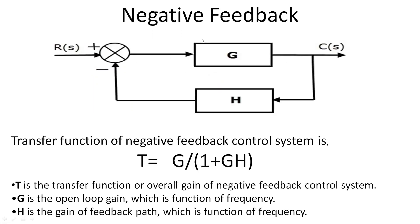For the negative feedback, the same applies. H is again a function of frequency, and G is again a function of frequency. T is the transfer function. In the case of negative feedback, though accompanied by the negative symbol, T equals the total transfer function of the system = G / (1 + GH). And this T is nothing but C(s) / R(s). That's exactly what we understand from negative feedback.